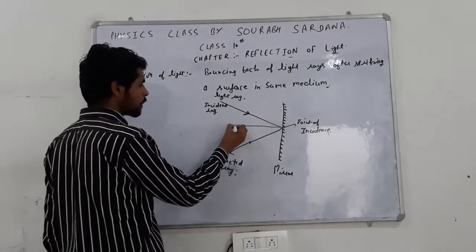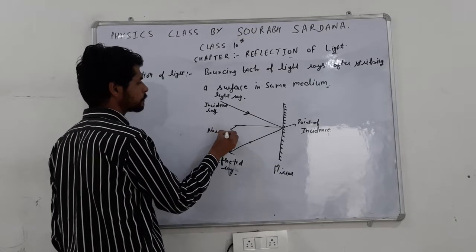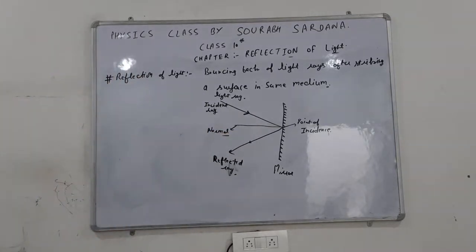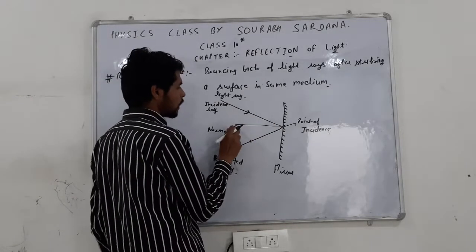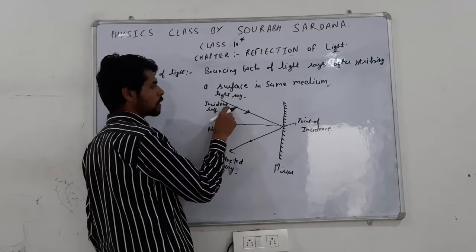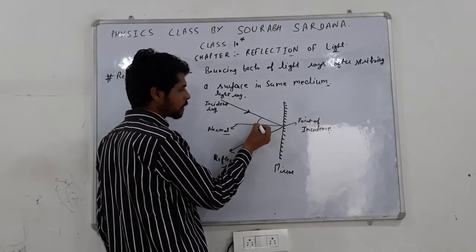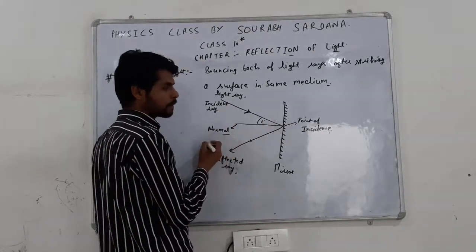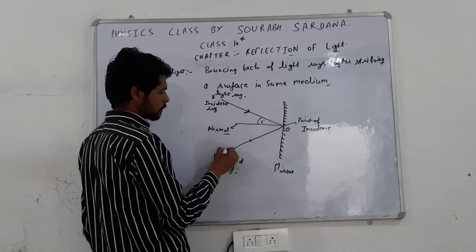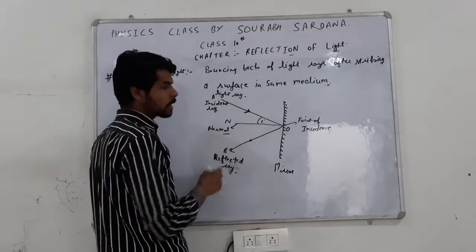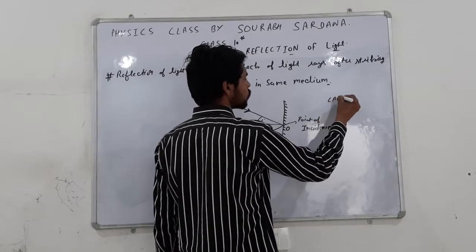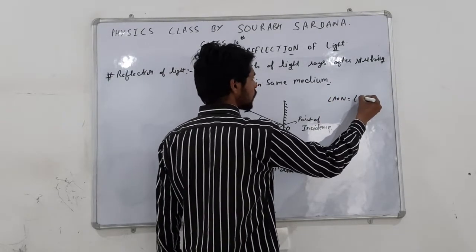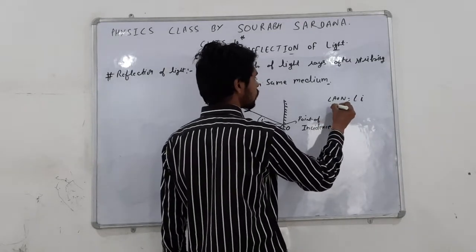At the point of incidence, a perpendicular is drawn — that is called the normal. Normal is always perpendicular to the surface. This angle is represented by I. The point is O, this is A, this is B, and this is N. Angle AON — that is angle I, the angle of incidence.